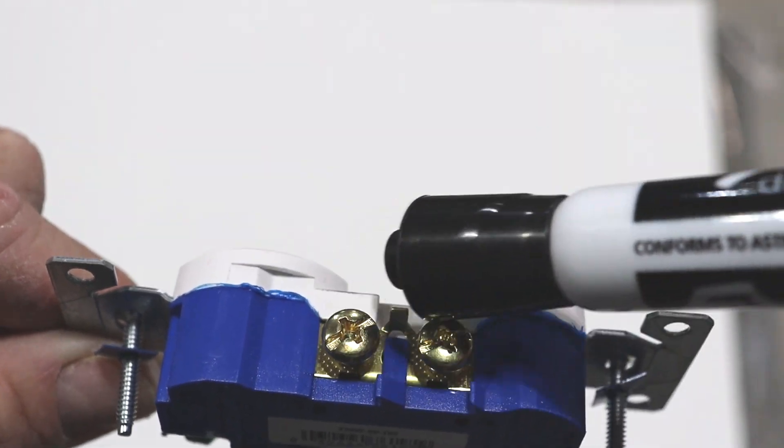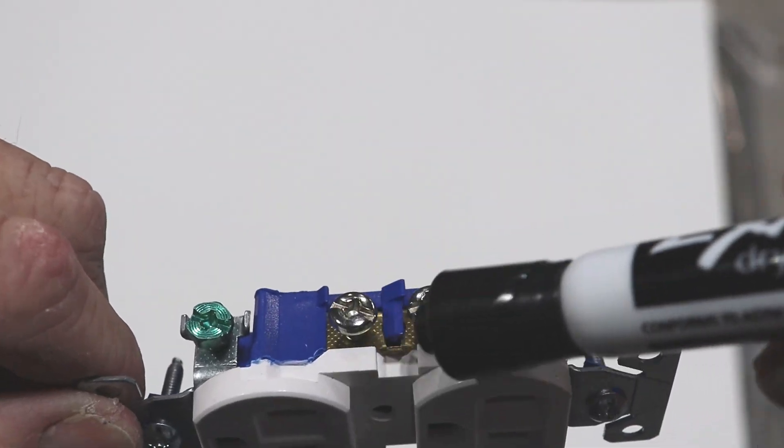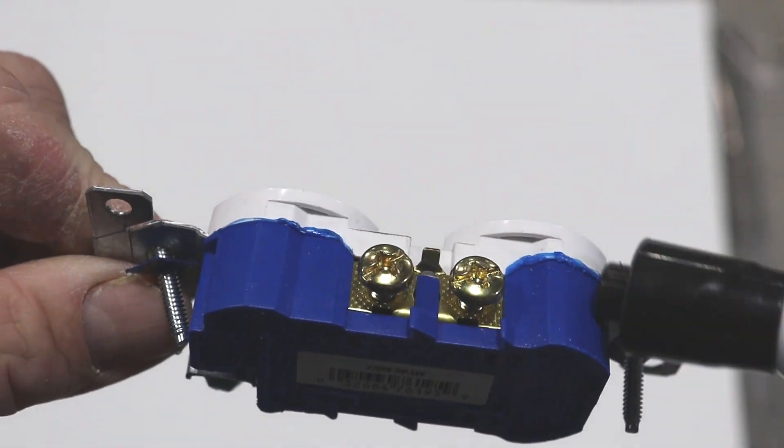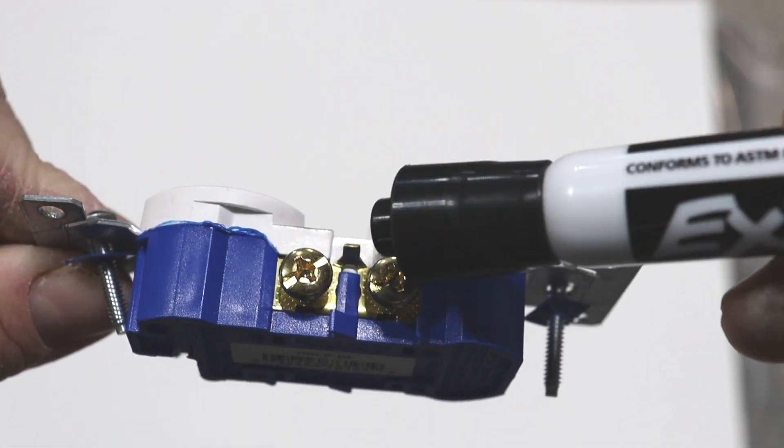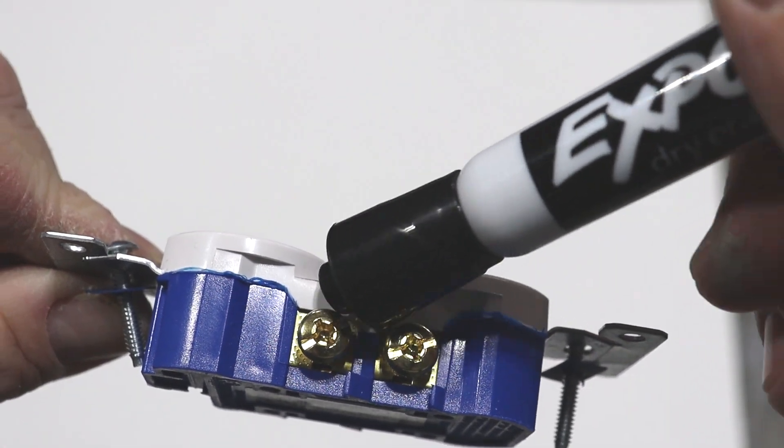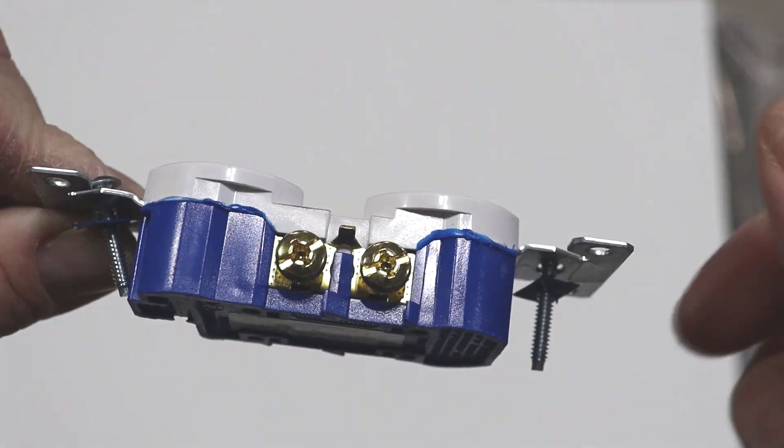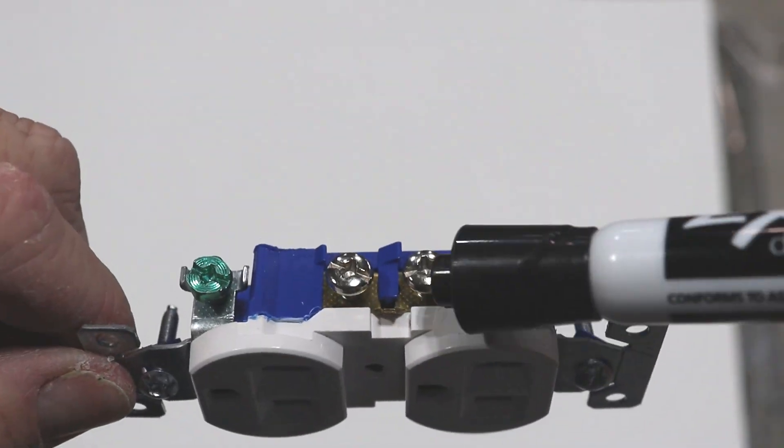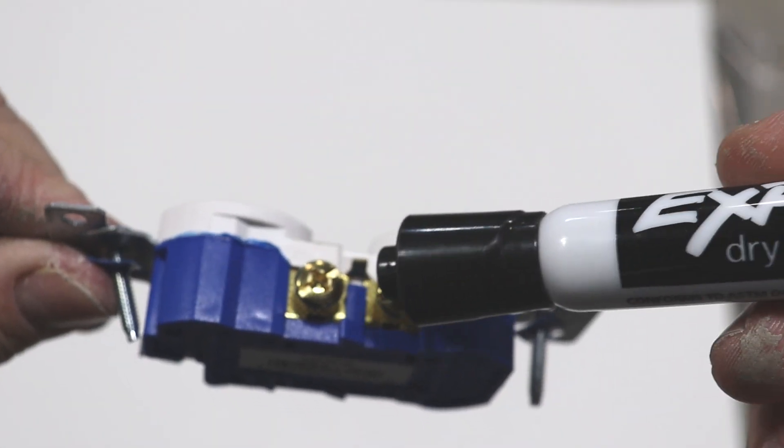So you notice on the side of an outlet there is this little bridge between the two screws, and you'll see that it's on the neutral side as well as the hot side. So what makes this circuit work is we can remove this little bridge between these two screws and separate our hot wires and make this circuit work. We don't have to do anything with the neutrals, just on the hot side.